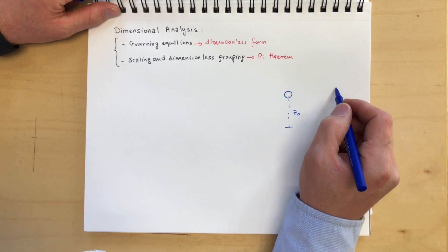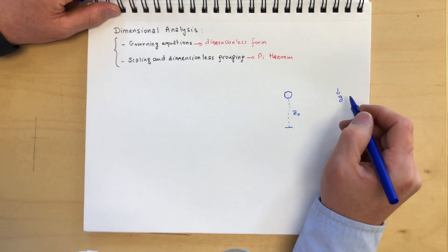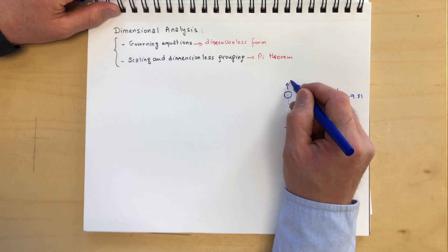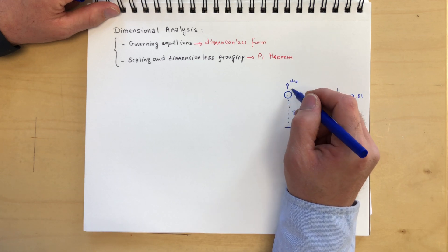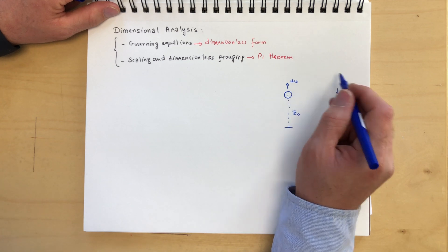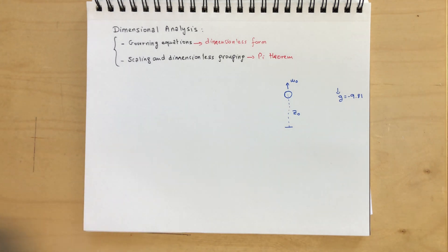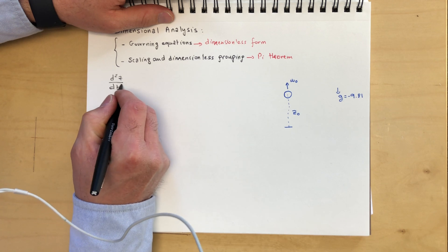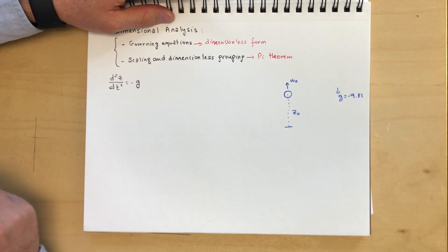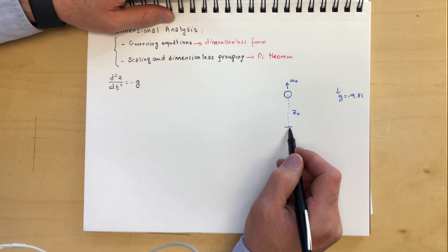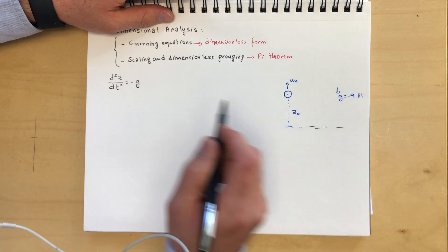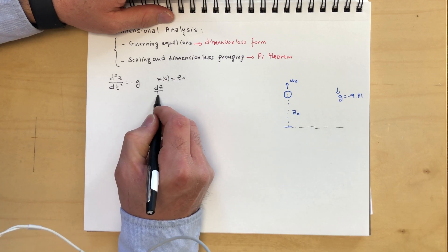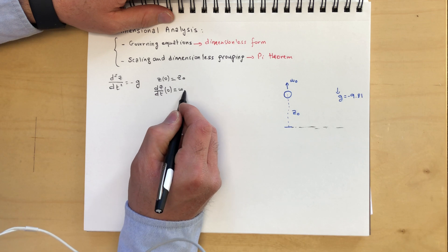subject to gravity, g minus 9.81. And that ball is being thrown upward at an initial velocity w0. And the question is, find the trajectory of this ball. And then if you apply Newton's law, you get the familiar equation d²z/dt² equal minus g for the height of the ball with respect to the ground. And the initial condition here, z at t equals 0 is equal to z0. And dz/dt at 0 is equal to w0.